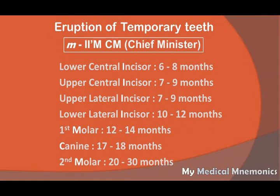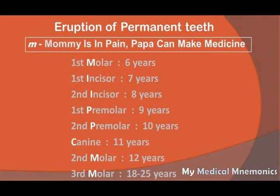Then canine at seventeen to eighteen months, then second molar at twenty to thirty months. This is the only confusing part — lower central first, then upper central, then upper lateral, then lower lateral. Otherwise the timing is simple to remember: six to eight, seven to nine, ten to twelve, twelve to fourteen, seventeen to eighteen, and last second molar twenty to thirty months. Now let's talk about eruption of permanent teeth.